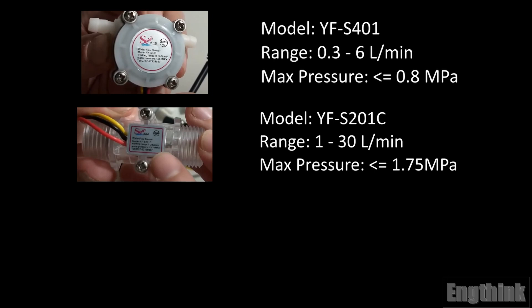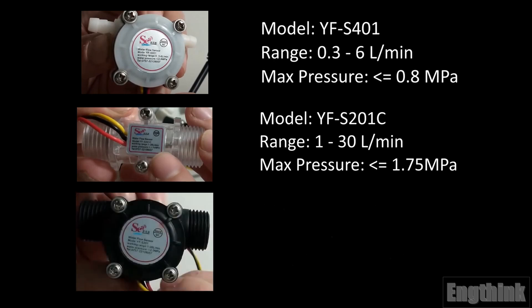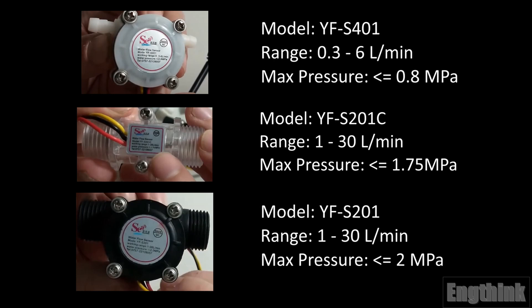And the last one, the black model, is YFS-201. The range of the flow rate is 1 to 30 liters per minute, and the pressure should be less than or equal to 2 MPa.